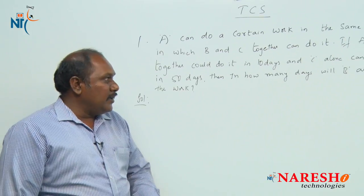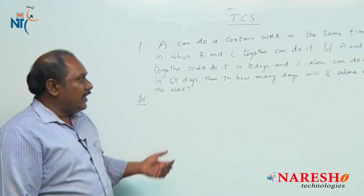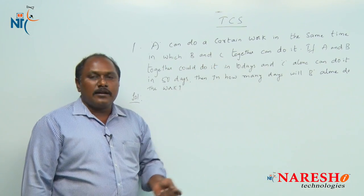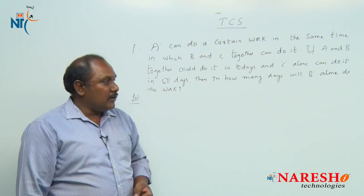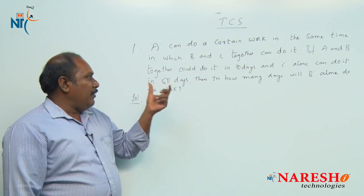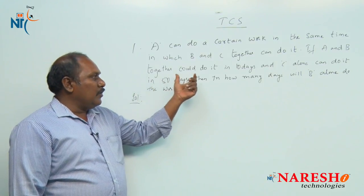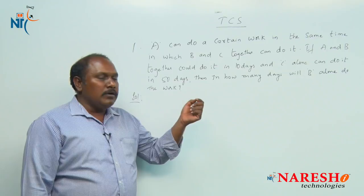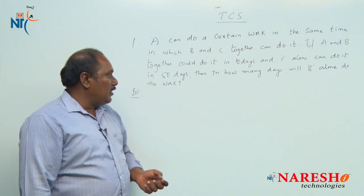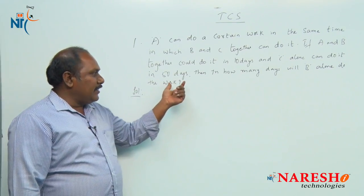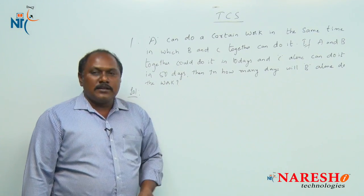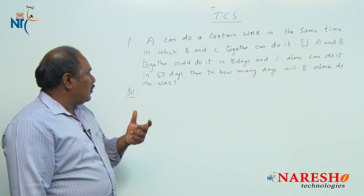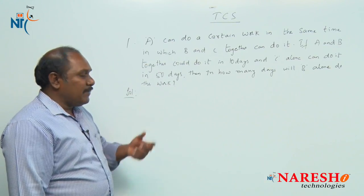A can do a certain work in the same time in which B and C together can do it. If A and B together can do it in 10 days and C alone can do it in 50 days, then in how many days will B alone do the same work?